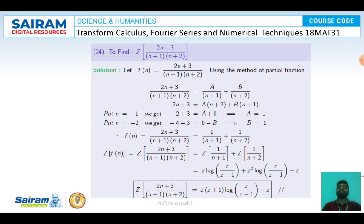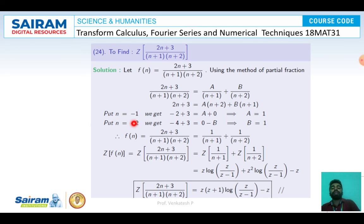For Z{(2N+3)/((N+1)(N+2))}, decompose using partial fractions: (2N+3)/((N+1)(N+2)) = A/(N+1) + B/(N+2). Setting N=-1 gives A=1; N=-2 gives B=1. So the expression equals 1/(N+1) + 1/(N+2). Applying Z-transform: Z{1/(N+1)} + Z{1/(N+2)} = Z·log(Z/(Z-1)) + Z²·log(Z/(Z-1)) - Z = (Z+1)·log(Z/(Z-1)) - Z.